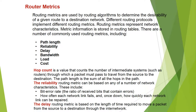Routing metrics are used by the routing algorithm to determine the desirability of a given route to a destination. Different routing protocols implement different routing metrics. Routing metrics represent network characteristics. Metric information is stored in routing tables.